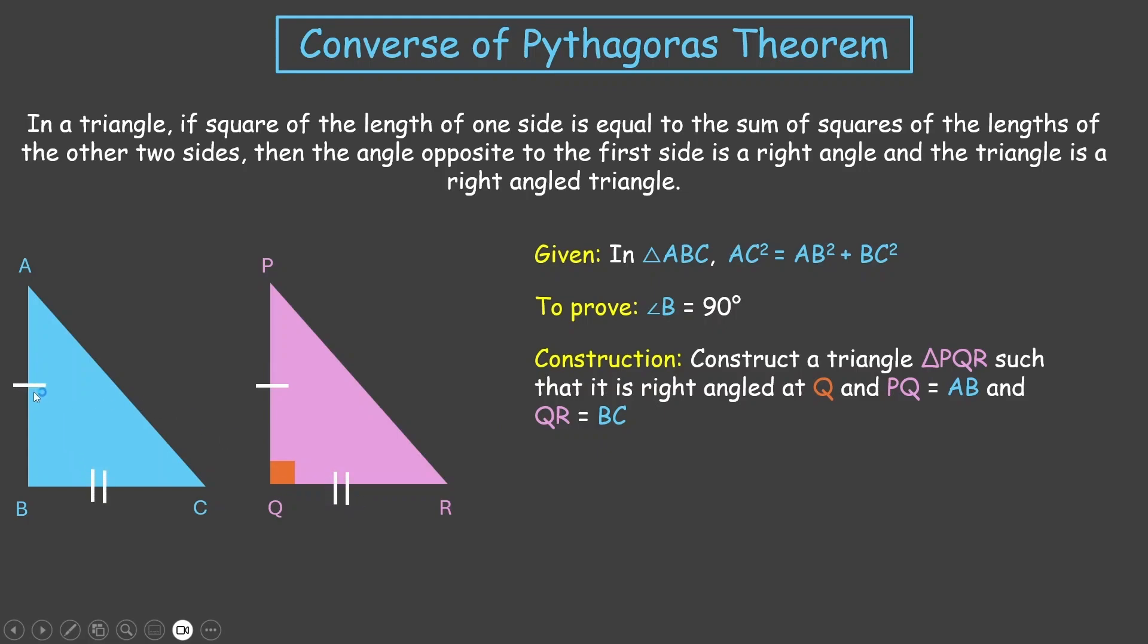So, let's say if AB was 5 and BC was 4, we are constructing PQ as 5, QR as 4, and placing them at a 90-degree angle. These two sides are perpendicular to each other. We are constructing triangle PQR in such a way.